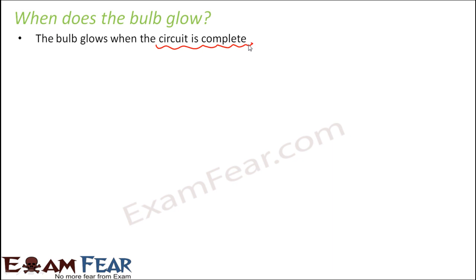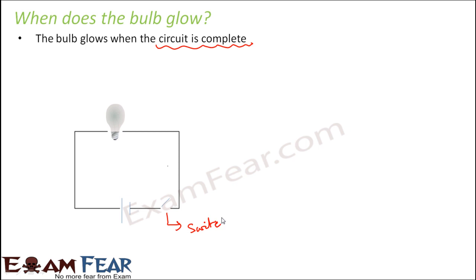Let us have a look at the circuit. This is how it looks when the switch is off — right now the bulb is not glowing. As soon as we switch it on, the circuit becomes complete and there is a path for the electrons to flow. Only when electrons flow is there a current. If the electrons stop flowing, there is no current and the bulb will not glow.